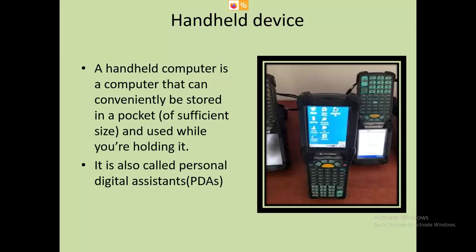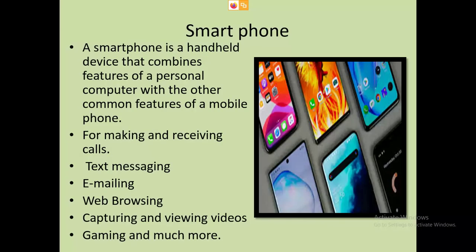These types of computers have a monitor, keyboard, and even a small printer. You must have seen this with the electricity reader. When every month one person comes to your house to take a meter reading, he brings one device with him. That device comes under the category of handheld device. They are also called PDAs.